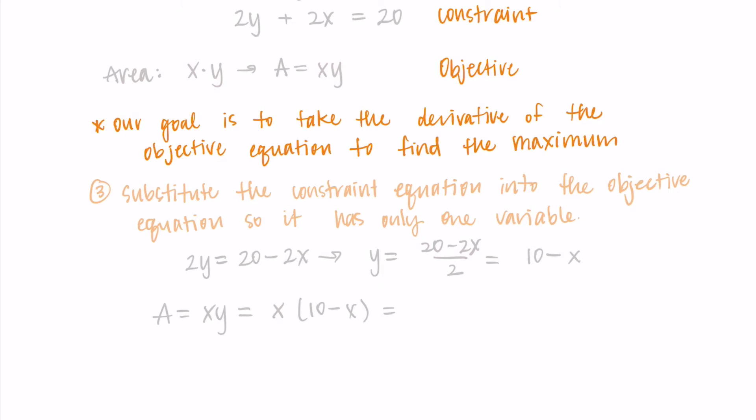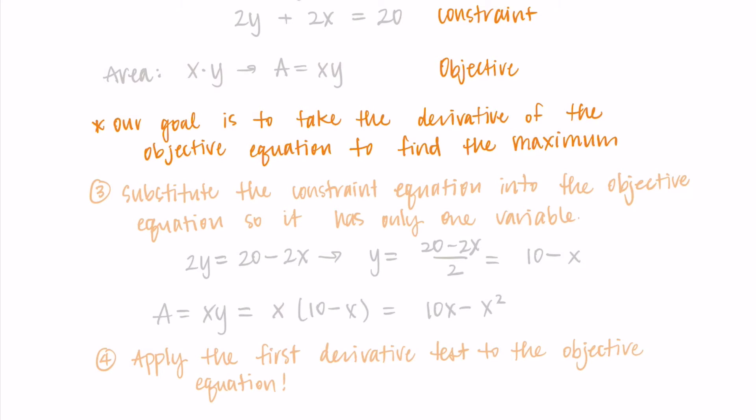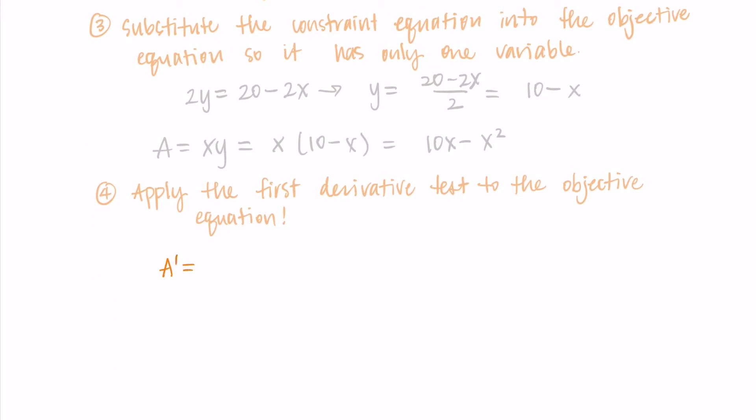Now I can just apply the first derivative test to this new objective equation that only has one variable. I can take the derivative of A, that's my area. I'm getting 10 - 2x. And now I can set this equal to zero to find my critical points.